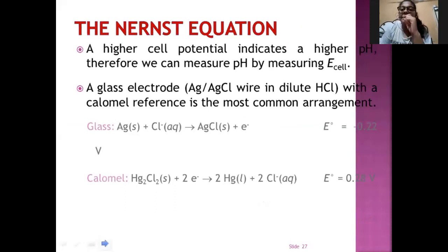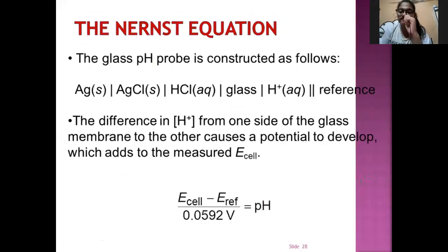Therefore, we can measure pH by measuring E cell. A glass electrode, Ag, AgCl wire and dilute HCl with a calomel reference is the most common arrangement. Here we can see glass, Ag plus Cl minus gives AgCl plus electron where electrode potential is minus 0.22 V and calomel, Hg2Cl2 plus 2 electron gives 2Hg plus 2Cl minus, here electrode potential is 0.28 V. The glass pH probe is constructed as follows. Ag slash AgCl slash HCl slash glass H plus reference. The difference in H plus from one side of glass membrane to the other causes a potential to develop which adds to the measured E cell. E cell minus E reference upon 0.0592 equals pH.